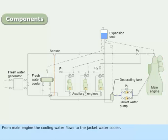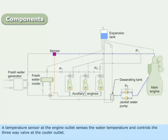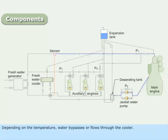From the main engine, the cooling water flows to the jacket water cooler. A temperature sensor at the engine outlet senses the water temperature and controls the three-way valve at the cooler outlet. Depending on the temperature, water bypasses or flows through the cooler.